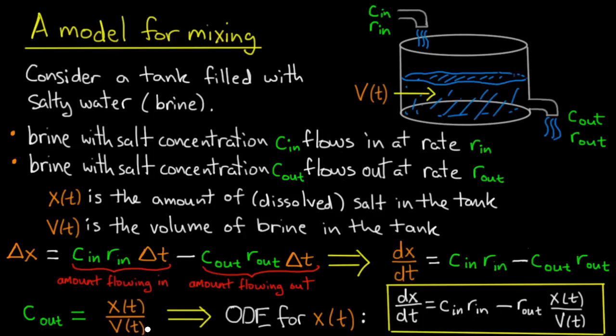That's exactly the kind of thing we're looking for. We want to incorporate x into this right-hand side. So by plugging in C_out equals x divided by v, we get an ordinary differential equation for x. And that is dx/dt equals C_in times r_in minus r_out times x over v.